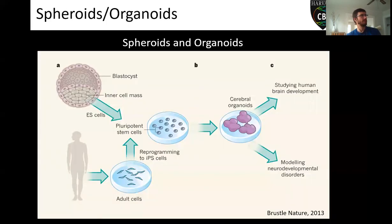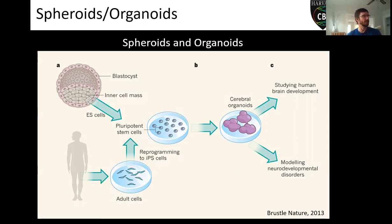To be honest with you, I can tell you the difference between a spheroid and an organoid. From what I've seen, organoids are usually bigger and have more different types of differentiation inside them. But basically what we're often dealing with here is a big ball of cells that are supposed to be a 3D model of some sort of tissue type.